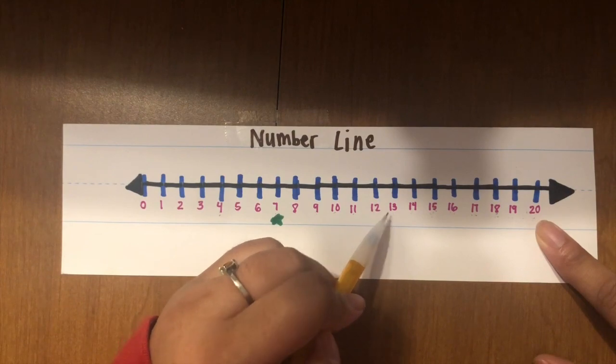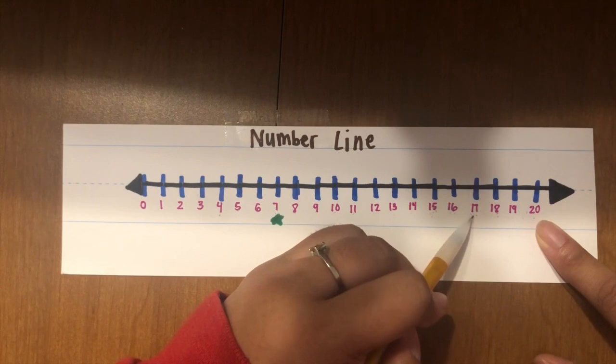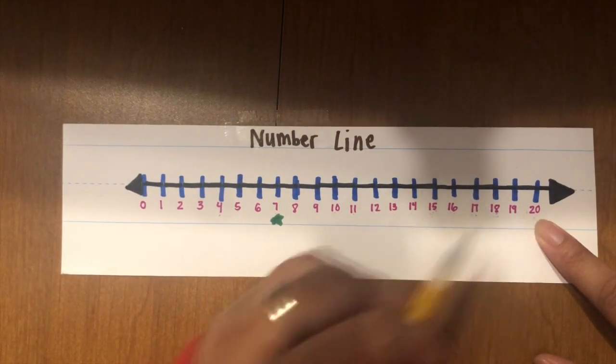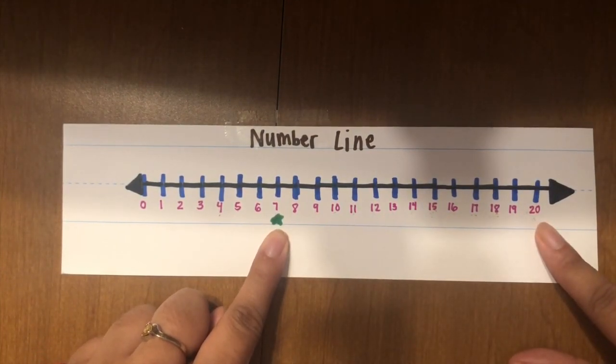Eleven, twelve, thirteen, fourteen, fifteen, sixteen, seventeen, eighteen, nineteen, twenty. Did you start at the number 7 and end at the number 20?